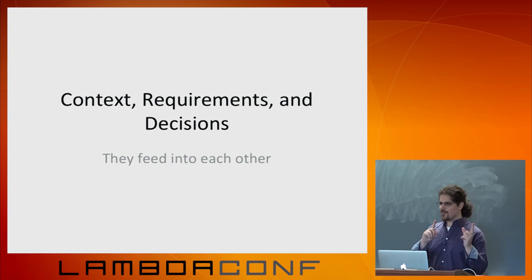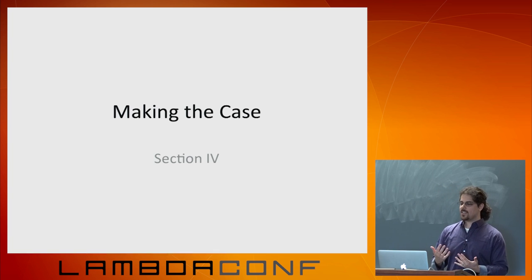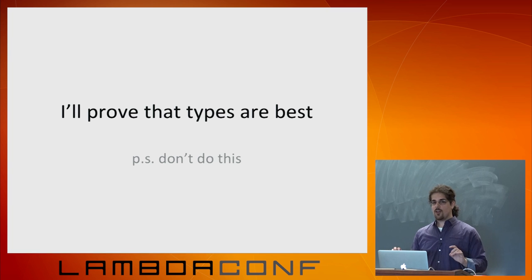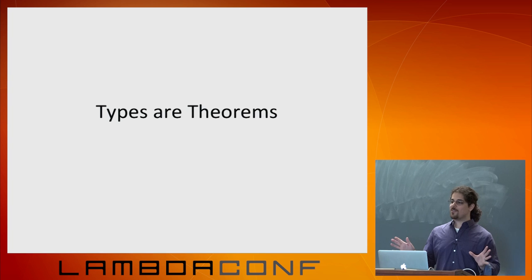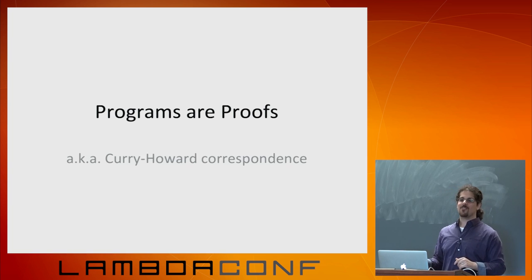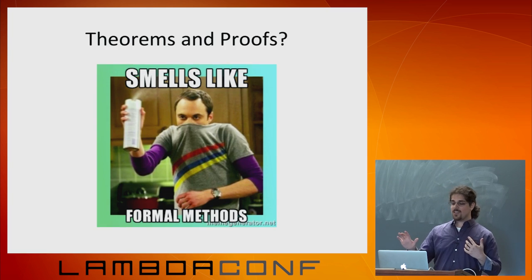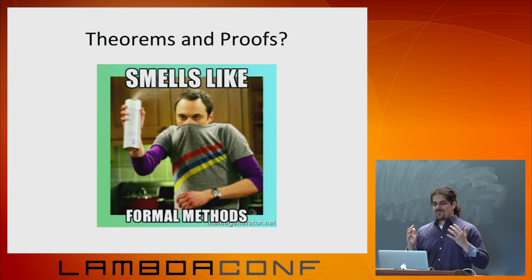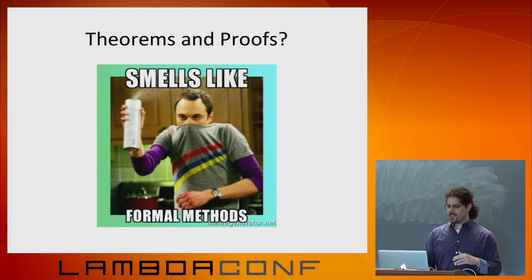In the final section, I'll make the case for why types are absolutely the best. Actually, this is definitely not what you should do. Types are theorems about what the function does, and programs are proofs — this is the Curry-Howard correspondence. Now, the person you just said this to: their reaction is 'theorems and proofs?' You cannot use the word 'theorem' when discussing types. Never use 'theorem' when discussing types with someone you're trying to convince — the people you need to say this to are not receptive to that word.